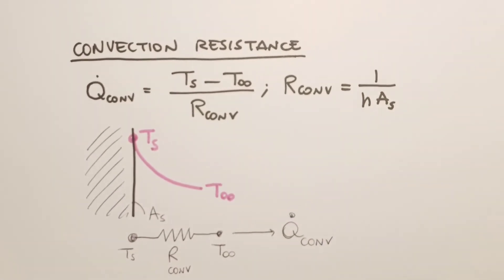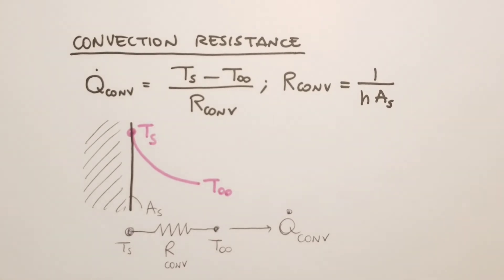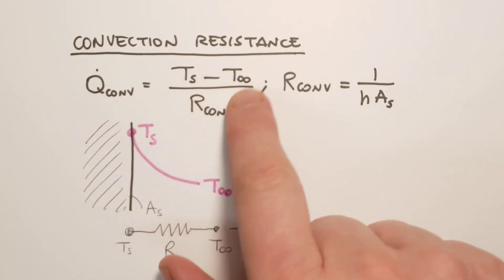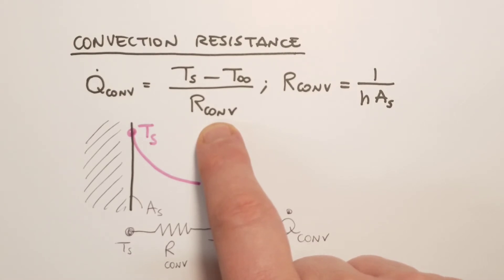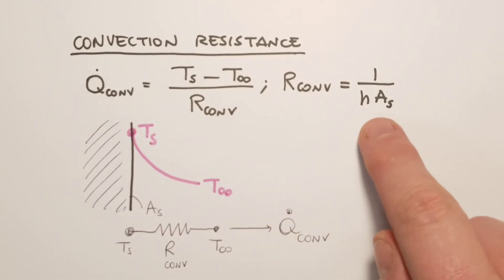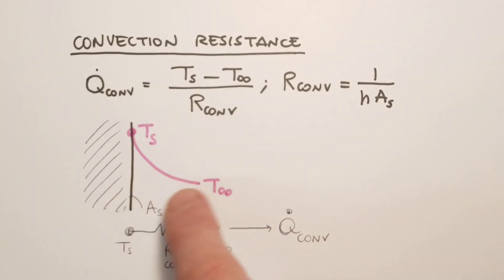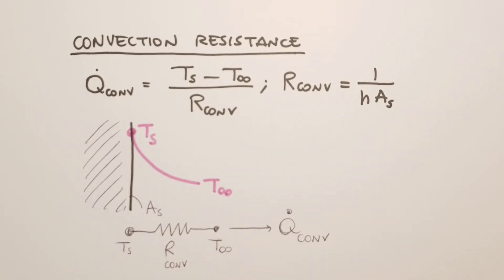We can follow the same procedure for convection. Starting with Newton's law of cooling, Q convection equals the ratio of (Ts minus T_infinity) to a convection resistance defined as 1 divided by h times As, where As is the surface area, h is the convection coefficient, Ts is the surface temperature, and T_infinity is the fluid temperature far from the wall. We represent this part of the thermal circuit with Ts and T_infinity and Q convection flowing through it.